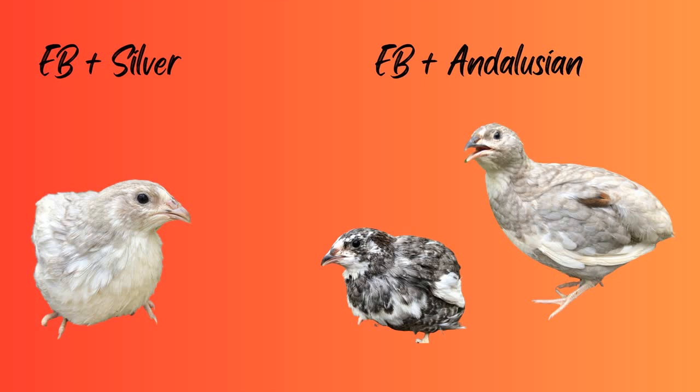You can also have EB in silver and EB with Andalusian. One of the big things with Andalusian to look for — if you see the bird on the right, it's got one feather that is the normal Tibetan coloring. That is how Andalusians look: you'll have one or more feathers that are not diluted like the rest of the bird.